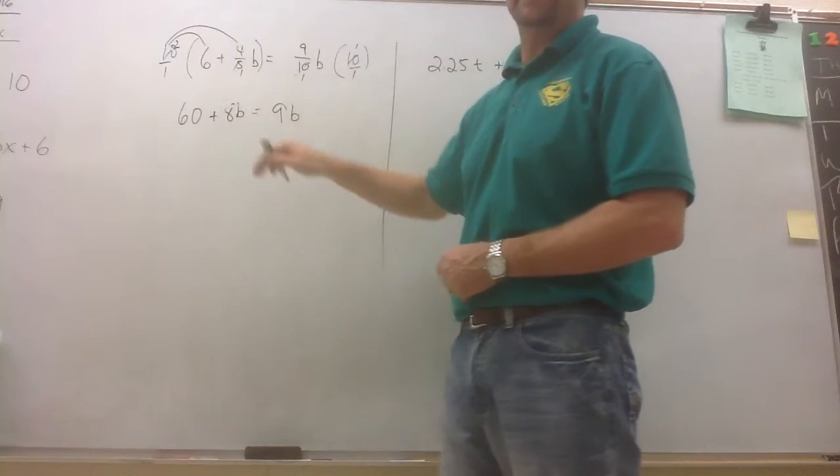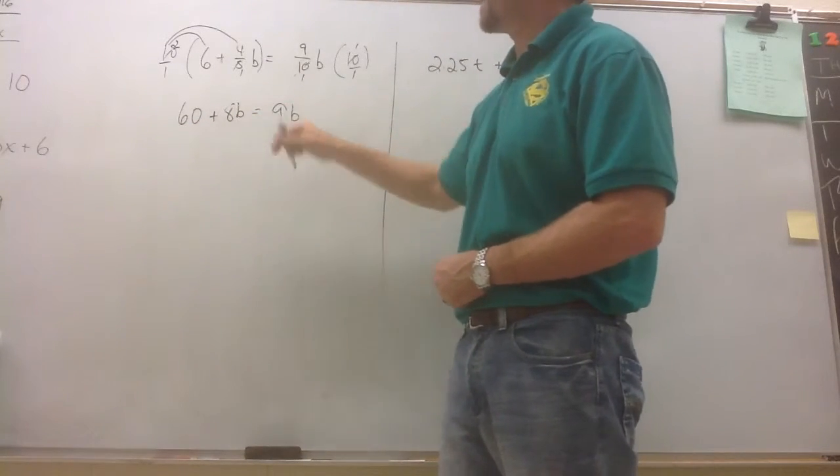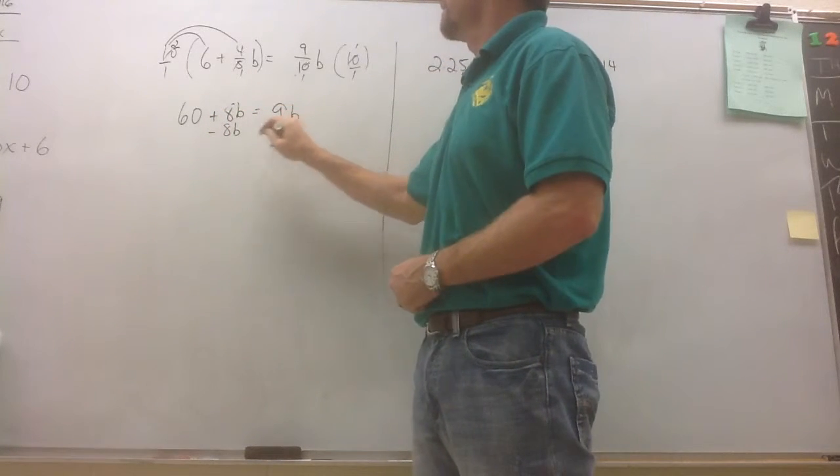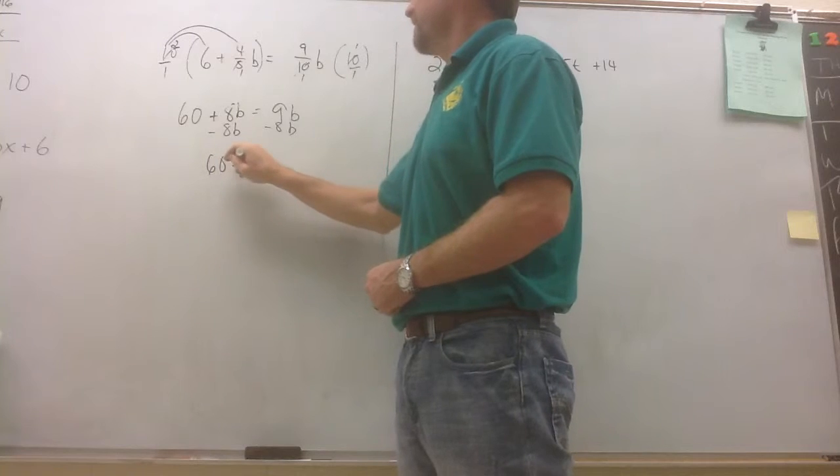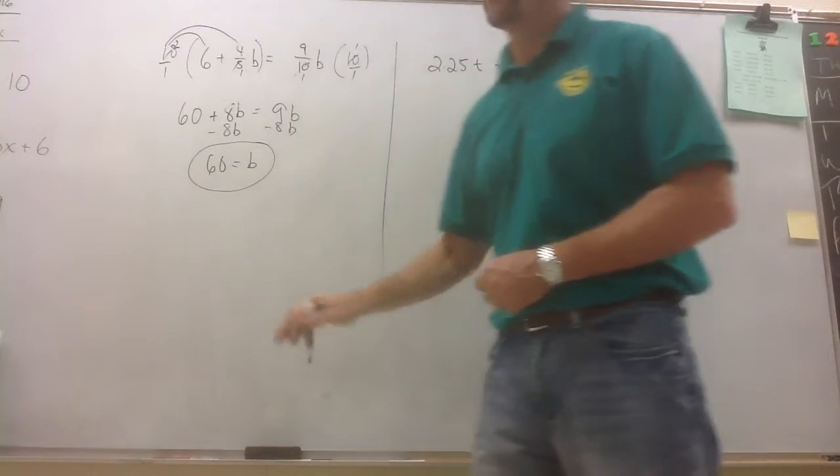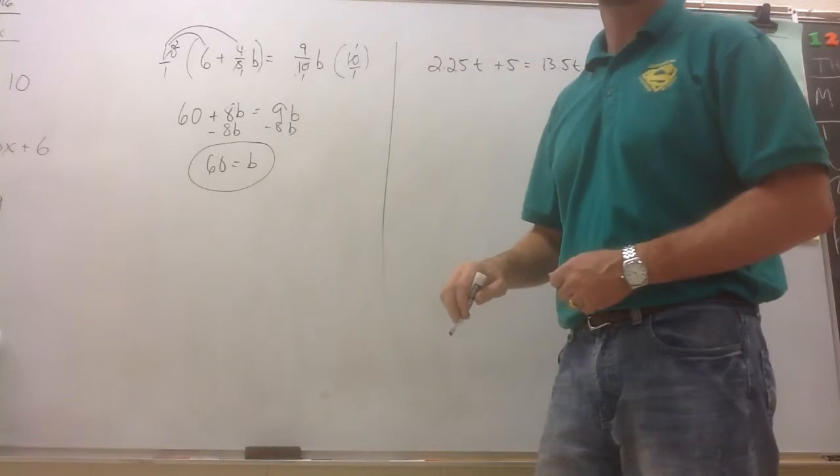Move the variable that has the least coefficient. Since 8 is less than 9, we'll subtract 8b's from both sides. And we're left with 60 equals b. And you've solved that equation.